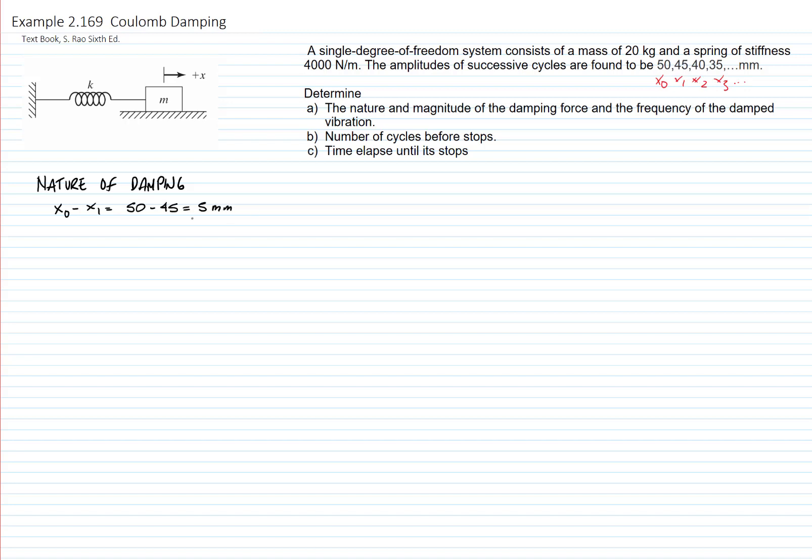So if we write the difference between the first cycle and the initial condition, we have 50 minus 45, this is 5 millimeters. And then we have the second amplitude with the third amplitude, 45 minus 40. And then we have successive cycles. We see that the reduction in amplitude is constant.